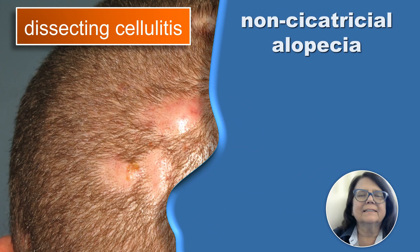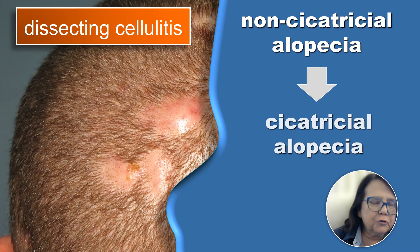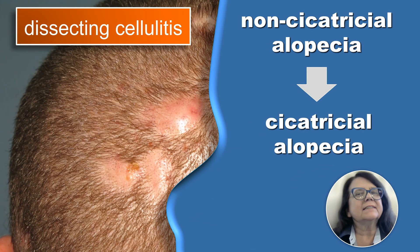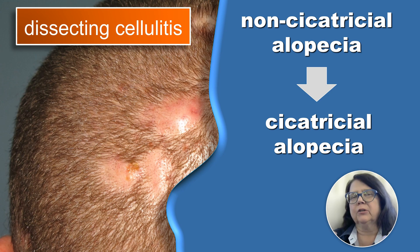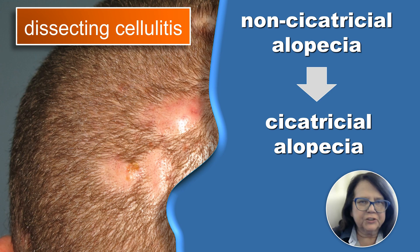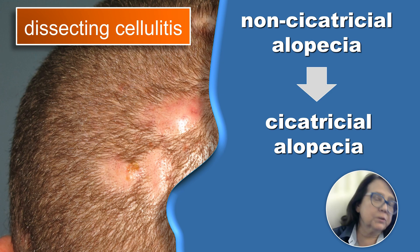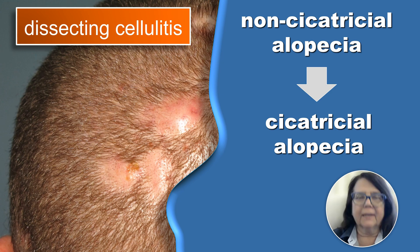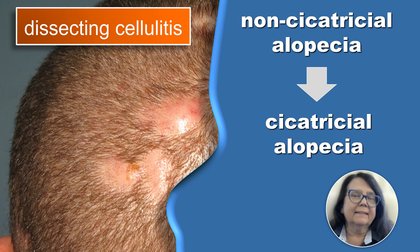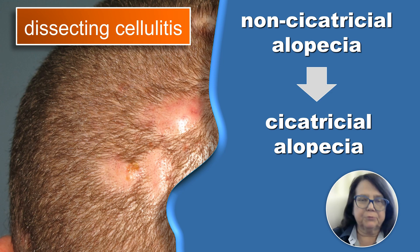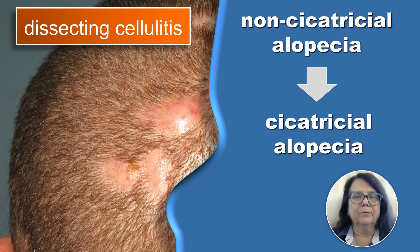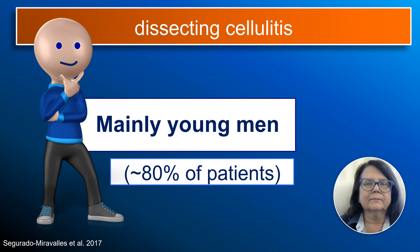Dissecting cellulitis is a quite unusual type of disease because it starts as a non-cicatricial alopecia, and if it is diagnosed and treated early enough, it is possible to obtain full hair regrowth. However, the disease then transforms into cicatricial alopecia, when the hair loss is permanent.